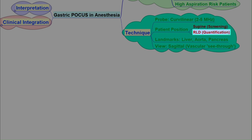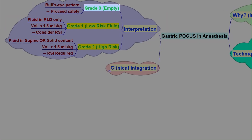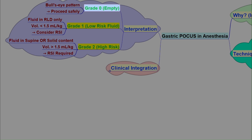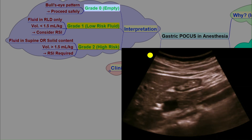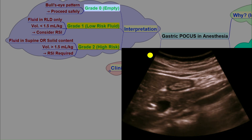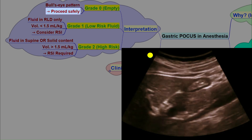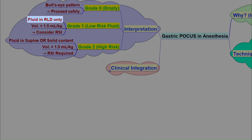This brings us to the core of the exam: interpretation. We use a simple three-grade system. Grade zero is what we want to see. The antrum is empty, appearing as a bull's eye or target sign — a small, flat, layered structure. This means the stomach is empty, and our decision is to proceed safely with the planned anesthetic.